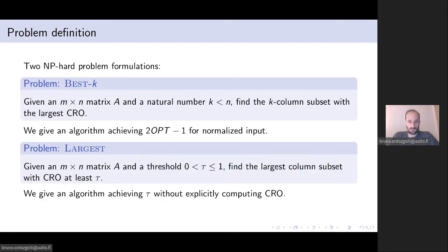The next problem consists of finding, given a matrix and a threshold, the largest column subset with CRO at least this threshold. And we give an algorithm which outputs a subset guaranteed to have at least this CRO without explicitly computing it in the subsets that are considered during the execution of the algorithm. And both algorithms are efficient and highly parallelizable.